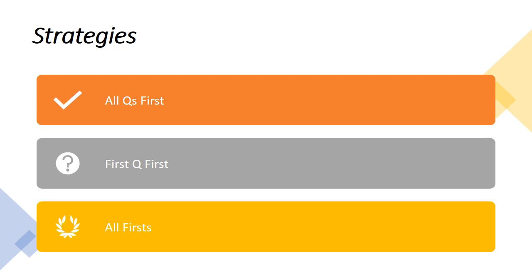The last strategy is 'All Firsts.' Read the heading of the essay, any subtitles, and in the first paragraph look for the thesis statement. In every other paragraph, read only the topic sentence. You do this because the thesis statement carries the whole idea of the essay and each topic sentence carries the idea of its paragraph. By doing this, when you go to the questions, you already know which paragraph contains the relevant information.